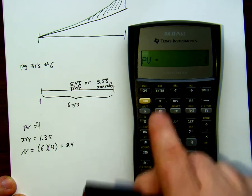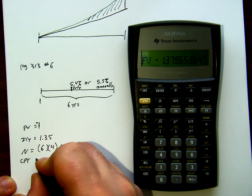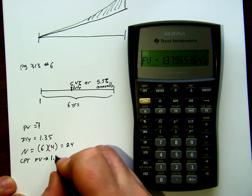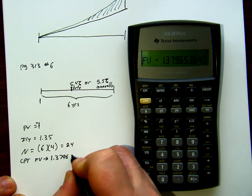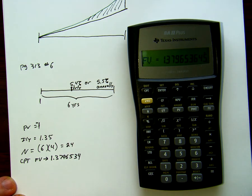Our negative 1 present value and we're going to compute a future value to be 1.3796534. Because we're only using $1, I want to have a lot of decimal places.